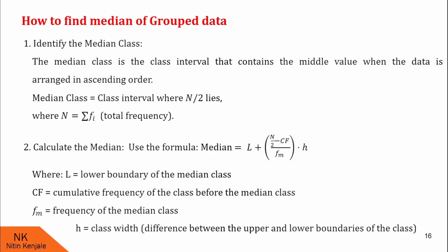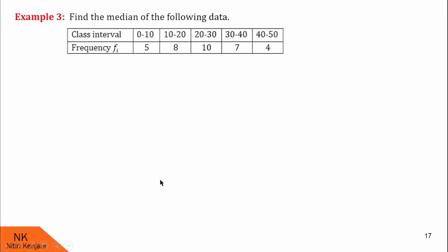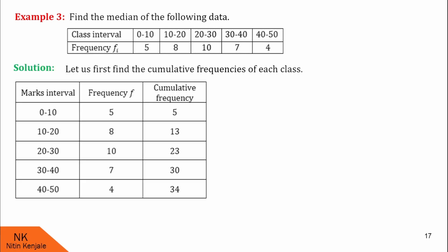Now let us understand this with the help of an example. In this third example, we are asked to find the median of the following data. This is grouped data where we are given the class interval and the corresponding frequencies. Let us first calculate the corresponding cumulative frequencies. We will prepare a calculation table: the first column represents the class intervals, the second column has the corresponding frequencies, and the third column will have the cumulative frequencies. The cumulative frequency for the first class is 5.